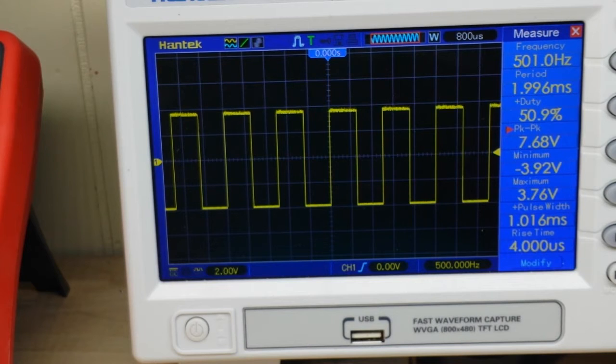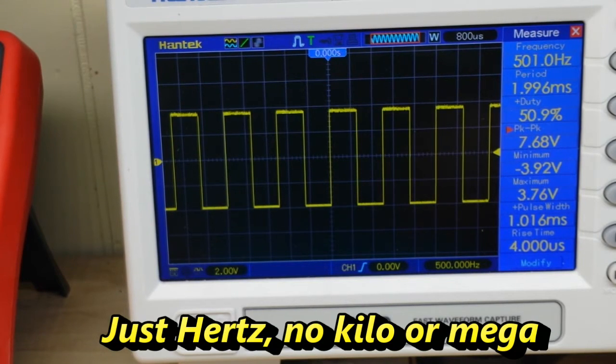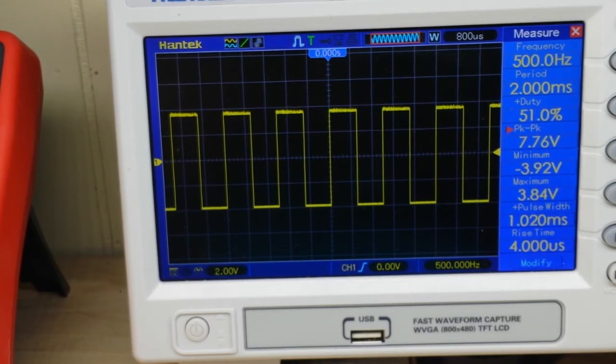The final thing we want to talk about is period. You can see our period, I'm at 501 kilohertz here. Let me change that to 500 kilohertz. You can see our period is 2 milliseconds. Now how do we get that? Well period is the reciprocal.